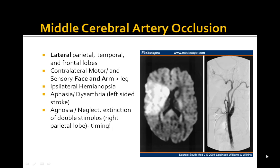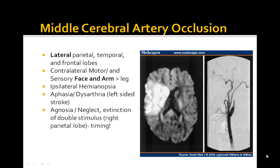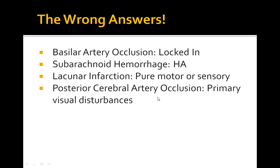The MCA classically affects the face and arm more than the legs, with aphasia and no cranial nerve deficits — those are the key findings. On CT, a hyperdense MCA region can be seen, with loss of the cortical ribbon and enlarged sulci. Subarachnoid hemorrhage would have a headache; basilar artery occlusion would have locked-in syndrome; posterior cerebral artery would cause visual disturbances — homonymous hemianopsia. This patient has sensory neglect, apraxia, hemiplegia, and aphasia — that's middle cerebral artery. With a lacunar infarct it would be pure motor or pure sensory. That completes our review of stroke symptoms and arterial territories in neurology.